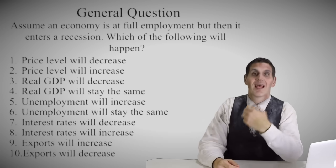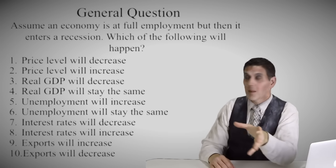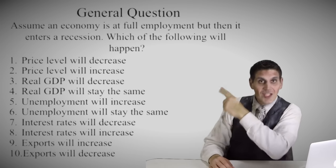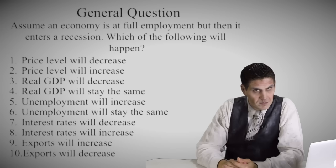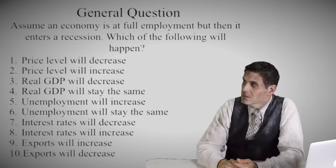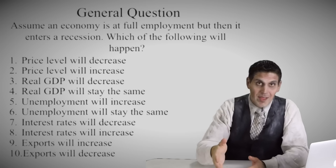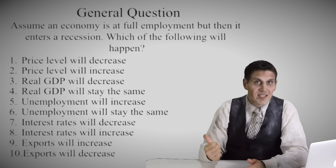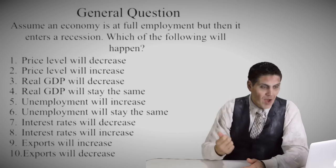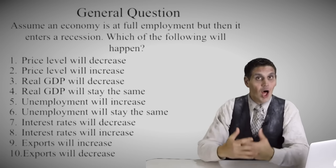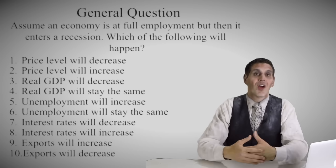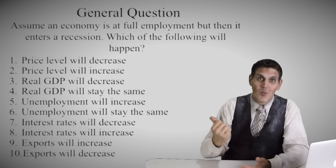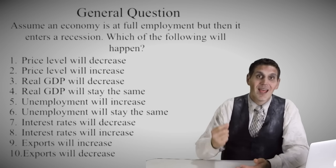Let's focus first on the bad news. Here's a general question about an economy: it's at full employment and then the economy goes into recession — which of these are going to happen? Pause the video and give yourself some time to figure it out. Here's the bad part about macroeconomics: these can all happen. Every single one of these is correct. The price level can go down or up, GDP can go down or stay the same — it all depends on the question. What kind of recession is it? Are we talking about the short run or the long run? There are all sorts of different things we have to know, because all ten of these are correct and logical.